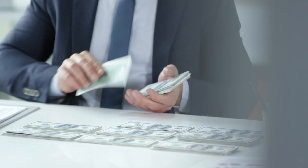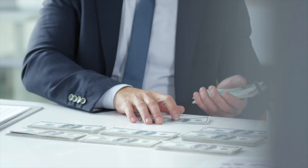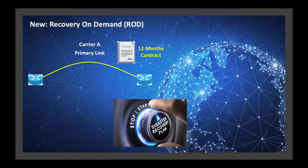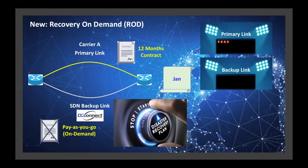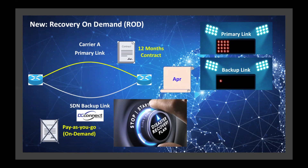Number 2: SDN as your backup insurance. If you are looking for a cost-saving backup solution, look no further. Recovery on Demand, or ROD, allows the customer to pay only for the hours when there is data traffic passing through the backup path. The pay-as-you-go billing model can help customers drive network costs down, since most backup paths in reality are just sitting there idle.